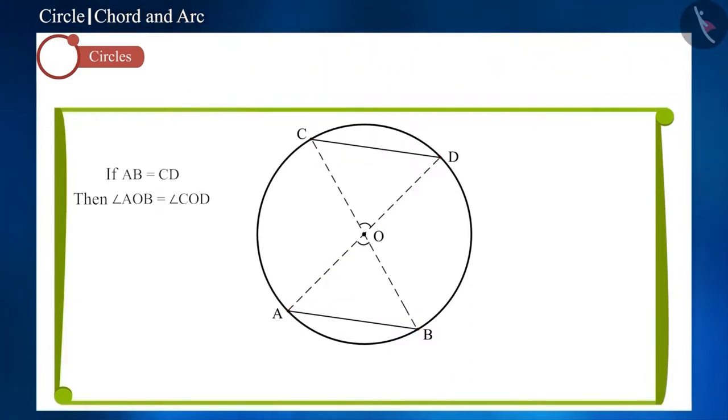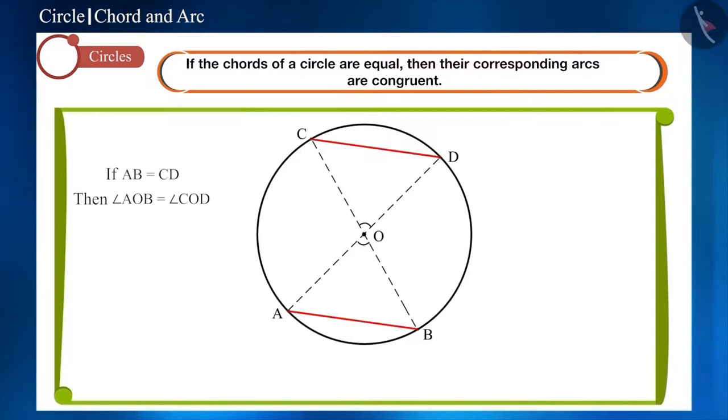And now we saw that, if the chords of a circle are equal, then their corresponding arcs are congruent. So, arc AB and arc CD will be congruent.